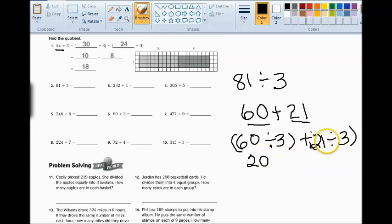And the quotient for 21 divided by 3, well that's a fact. So I know that, 21 divided by 3 is 7. Why? Because 3 times 7 is 21. When I add 20 plus 7 together, the quotient from this portion, and the quotient from this portion, I get the full answer of 27. And the answer to 81 divided by 3 is 27.